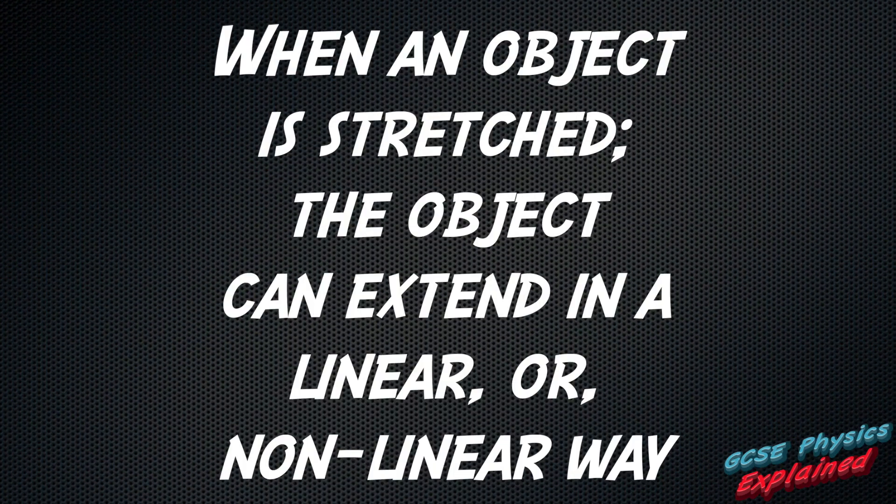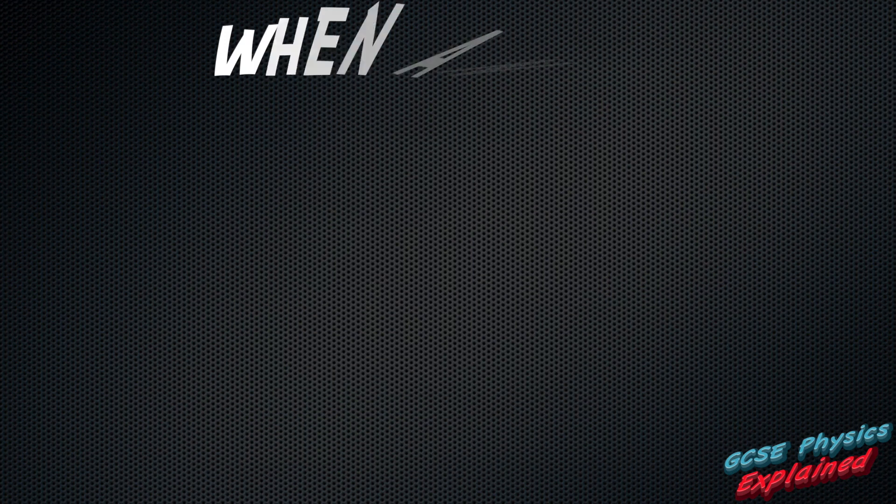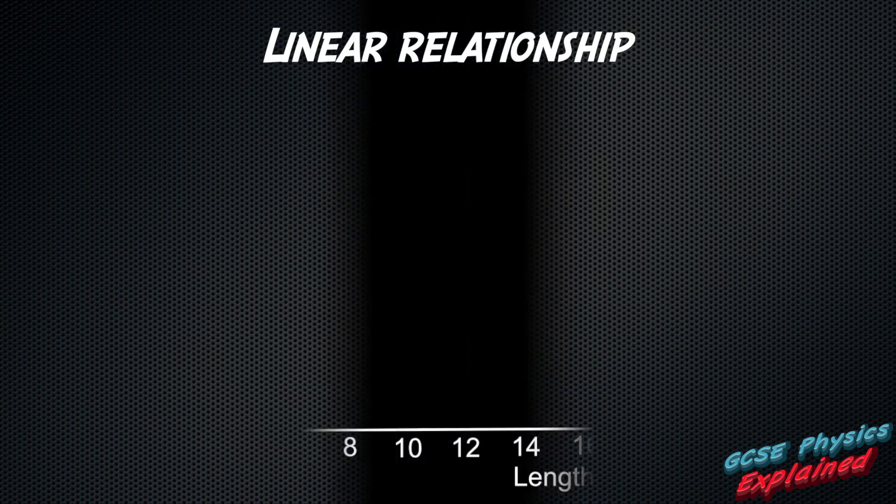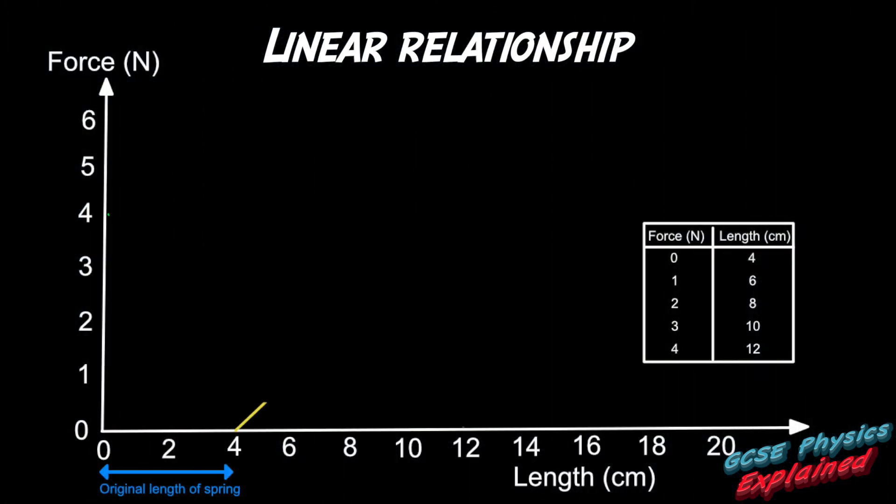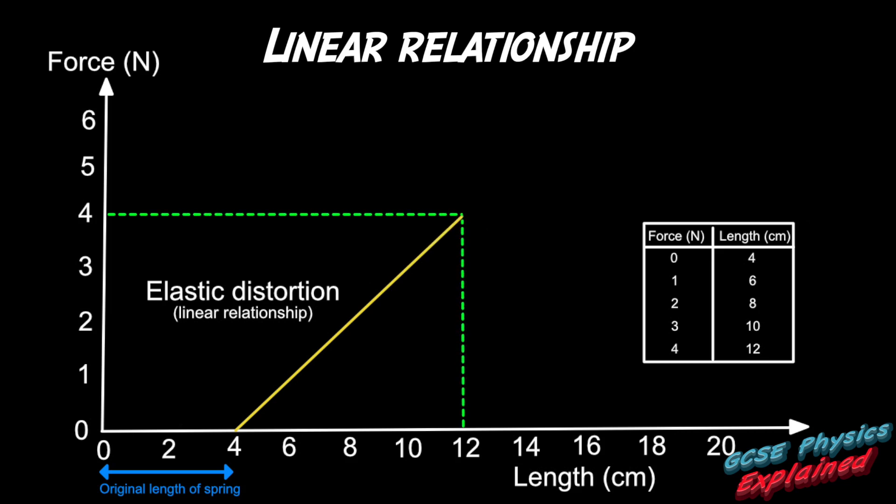When an object is stretched, the object can extend in a linear or non-linear way. If there is a linear relationship between the force acting on a spring and the length of the spring, a graph of force against length will be a straight line that steadily increases from bottom left to top right.